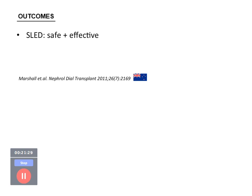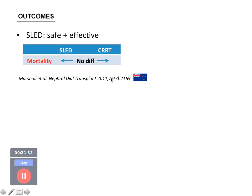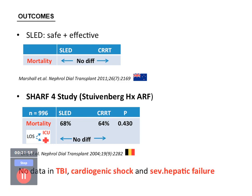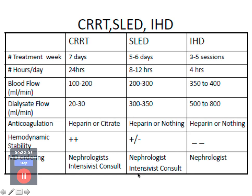SLED has been found to be safe and effective. An Australian study found no difference in mortality between SLED and CRRT. The SHARP study from Belgium — the largest study with 996 patients — found similar mortality, ICU length of stay, and hospital length of stay between SLED and CRRT. However, data on superiority or non-inferiority of SLED in traumatic brain injury, cardiogenic shock, or severe hepatic failure are lacking.